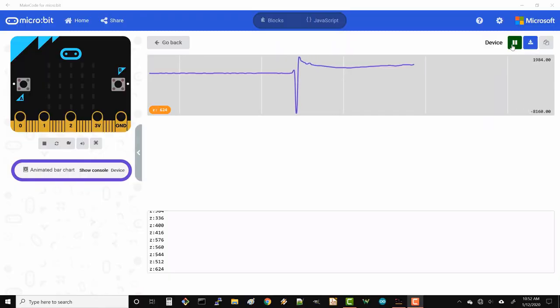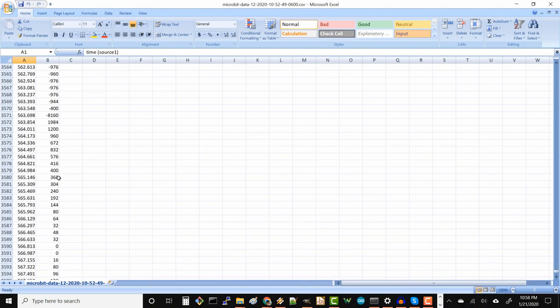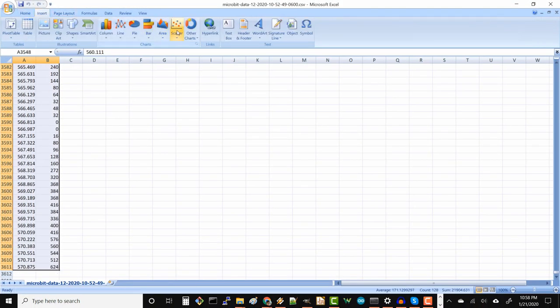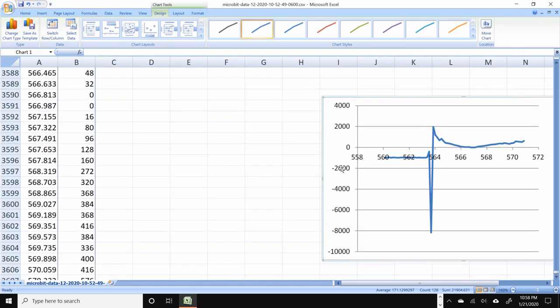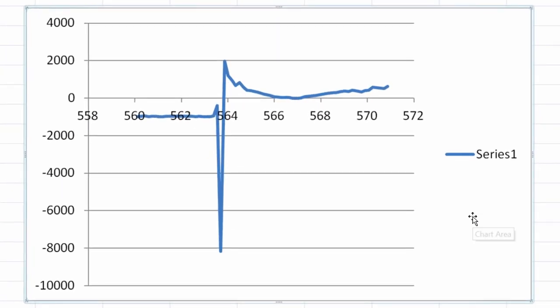After the rocket lands, click the pause button and download the data. We can open the saved data in Excel to analyze it. If we graph it, we can see exactly when the rocket launched. We can see that the accelerometer maxed out at negative 8g of acceleration.